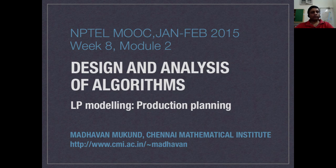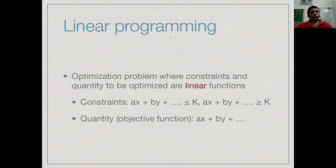Let us look at another example of modeling a problem using linear programming, again to do with production. Recall that a linear program is an optimization problem where you have some variables describing the quantities you want to compute, linear constraints on these variables, and a linear function describing what you want to optimize — maximize or minimize. That is called the objective function.